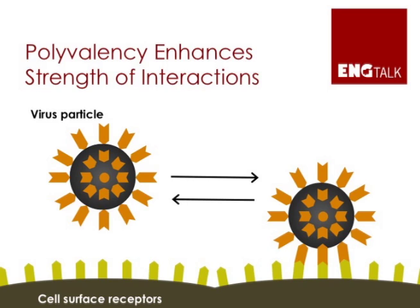A major advantage of polyvalency is that it can confer a strength or affinity — that is, orders of magnitude greater than that for a one-on-one monovalent interaction. The figure here shows you an example of a prototypical polyvalent interaction: the attachment of a virus to its target cell.